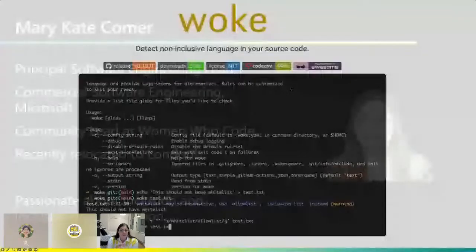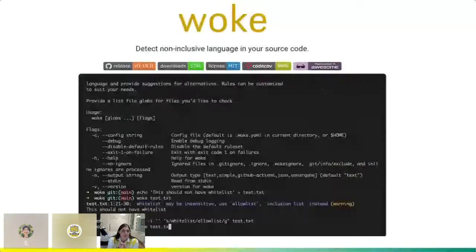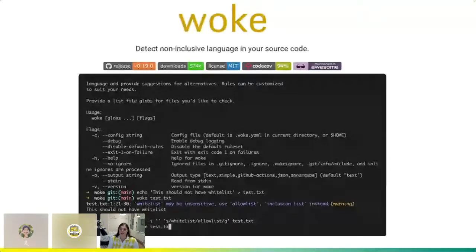Between customer engagements, we generally look for open source projects that we can contribute to that drive impact to the larger engineering community. We came across this open source linter called Woke, used to detect non-inclusive language in your source code. While I certainly can't take credit for coming up with Woke, I had the pleasure of contributing to the open source tool and taking this linter into our own engineering processes.